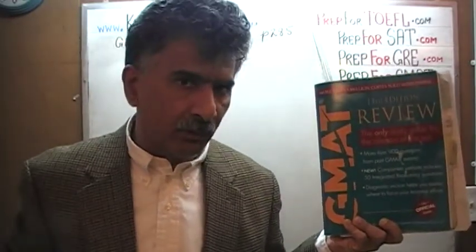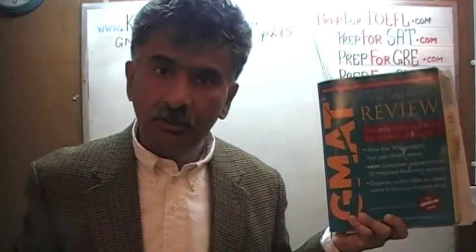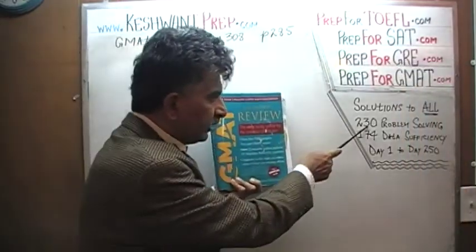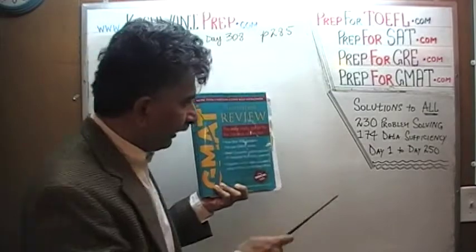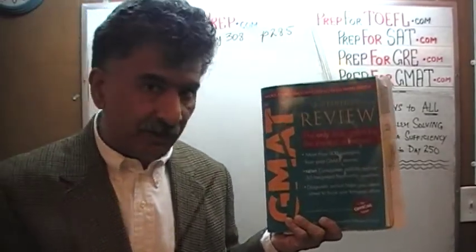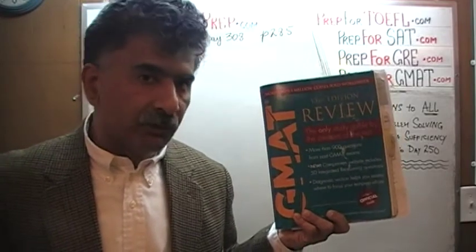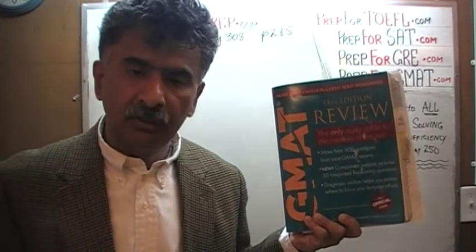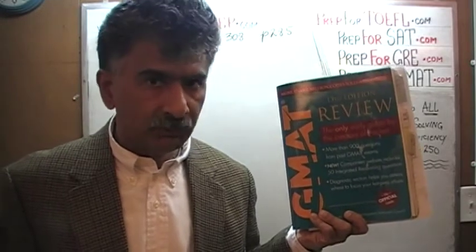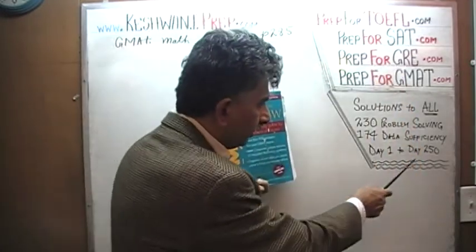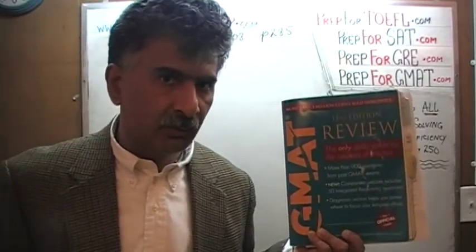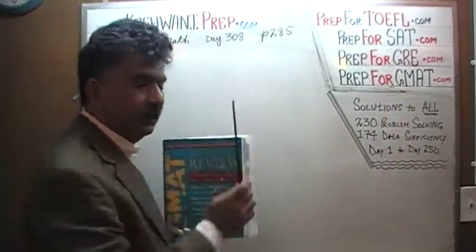If you do not own this book already, buy it immediately — you are going to need it. The book contains 230 problem solving questions and 174 data sufficiency questions. We have already solved every single math problem from this book. If you are interested in watching the original solutions, you will find them from day number 1 through 250. Right now we are in the process of redoing the problems and we are on page number 285.